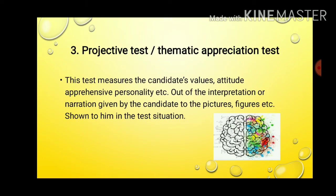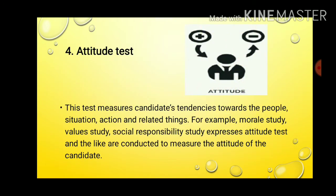The third is the projective test, also known as the thematic apperception test. This measures the candidate's values, attitude, apprehensions, and personality from their interpretation. The fourth is the attitude test, which measures the candidate's tendencies towards people, situations, actions, and related things. For example, moral studies, value studies, and social responsibility studies are conducted to measure the attitude of the candidates.